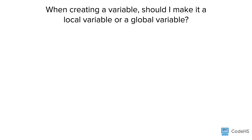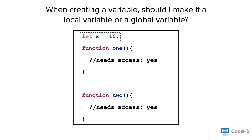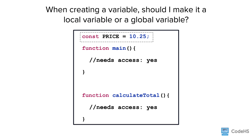So how do you know when to create a local variable and when to create a global variable? First of all, you can ask yourself: do multiple functions need access to the variable? If the answer is yes, create the variable globally. Our price variable is a good example of this — the value of the price variable will not change, and we wanted multiple functions accessing it, so we made it a global variable.